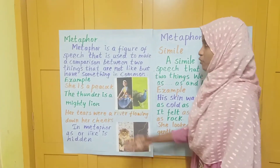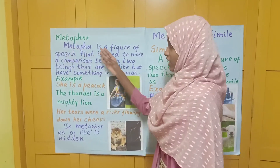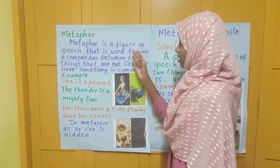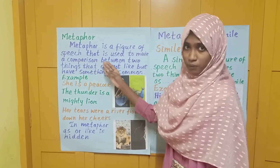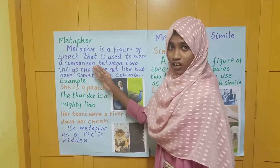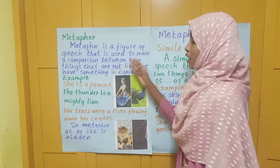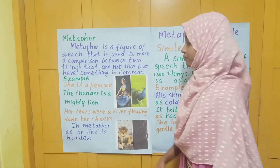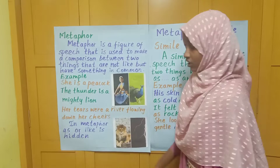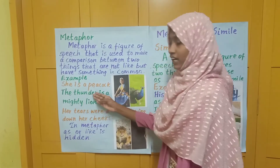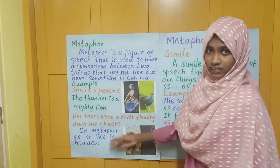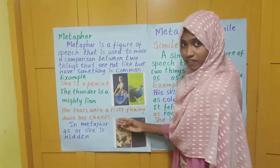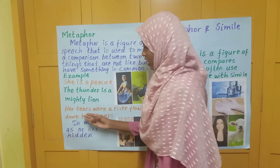Next we are going to see about metaphor. Metaphor is a figure of speech that is used to make a comparison between two things that are not alike but have something in common. For example, she is a peacock. The thunder is a mighty lion. Her tears were a river flowing down her cheeks.